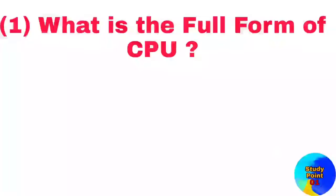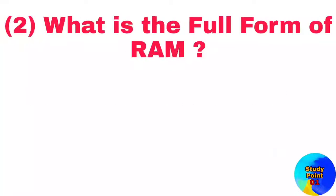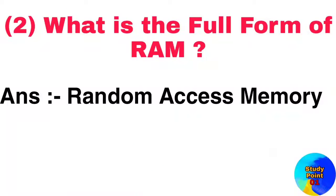Question number 1: What is the full form of CPU? Answer: Central processing unit. Question number 2: What is the full form of RAM? Answer: Random access memory.